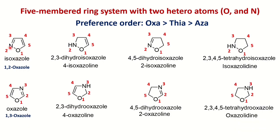With oxygen at position 1 and nitrogen at position 3, the compound is 1,3-oxazole (trivial name: oxazole). Its partially saturated forms exist, and the completely saturated form is oxazolidine — the suffix '-olidine' is used because nitrogen is present in the ring.